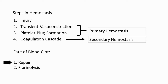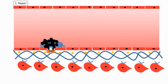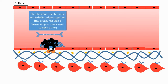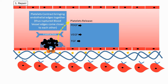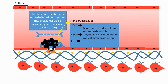After the blood clot has formed, it allows the surrounding area to undergo repair. During repair, platelets and the blood clot contract, bringing ruptured endothelial edges closer together. Platelets also release chemokines: platelet-derived growth factor (PDGF), vascular endothelial growth factor (VEGF), and fibroblast growth factor (FGF). PDGF regenerates the endothelial lining and smooth muscles. VEGF causes angiogenesis and recanalization of the blood vessel and production of collagen to repair the subendothelial lining. FGF is also responsible for angiogenesis.